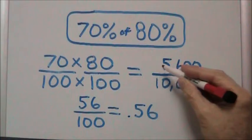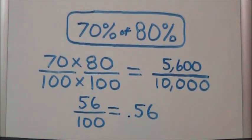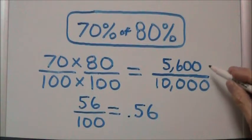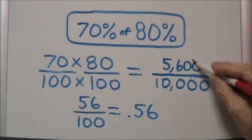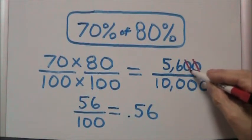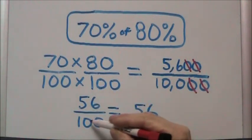This is going to give us 5,600 over 10,000. Now we can easily simplify this fraction by removing an equal amount of zeros from both the numerator and the denominator. So we take two zeros away from the numerator, two zeros away from the denominator, and we're left with 56 hundredths.